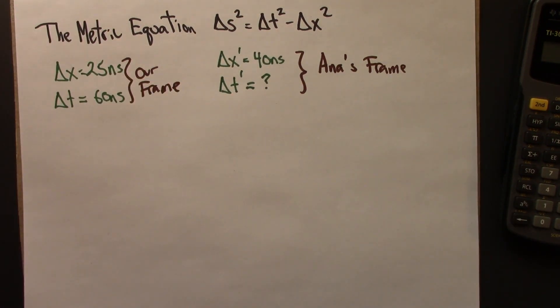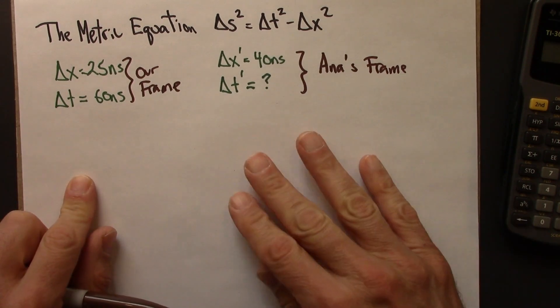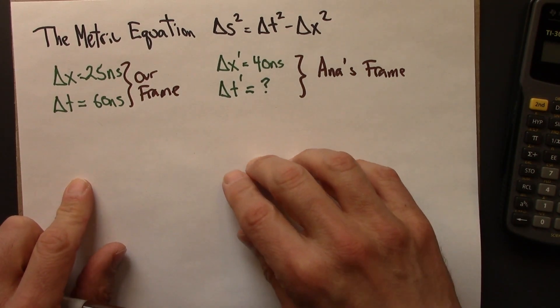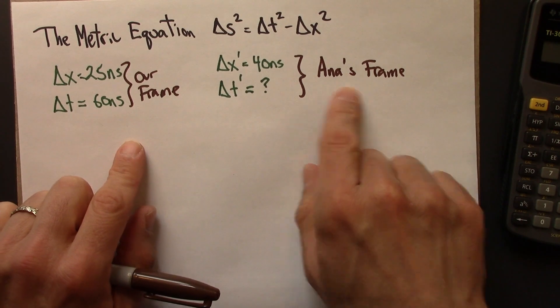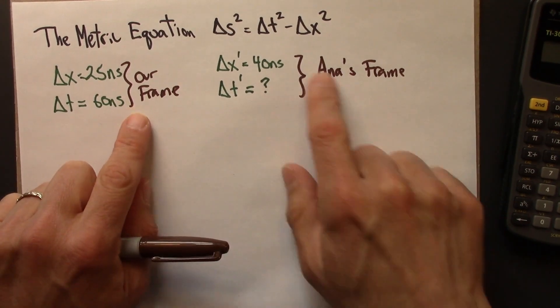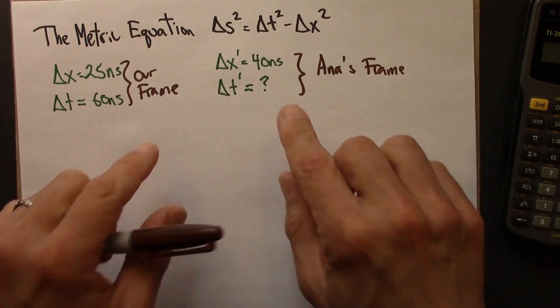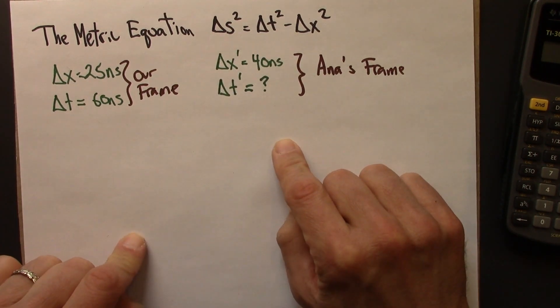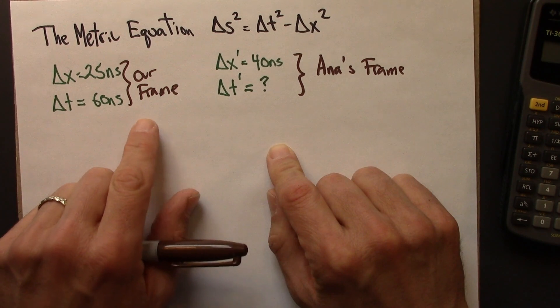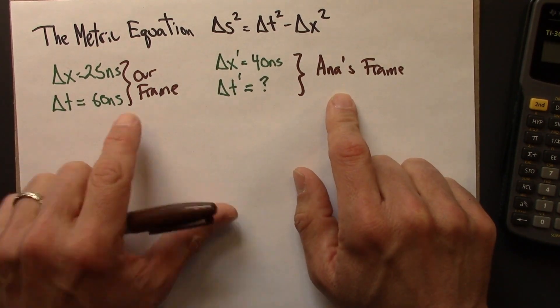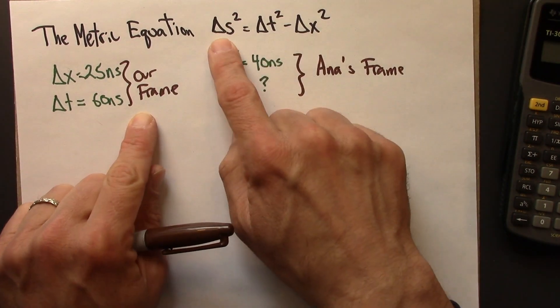Alright, so the key for this problem is to realize that Anastasia and us, we will agree on delta s. Just like two observers would agree on the distance on a map between a and b, here in special relativity, two observers will agree on the spacetime interval.